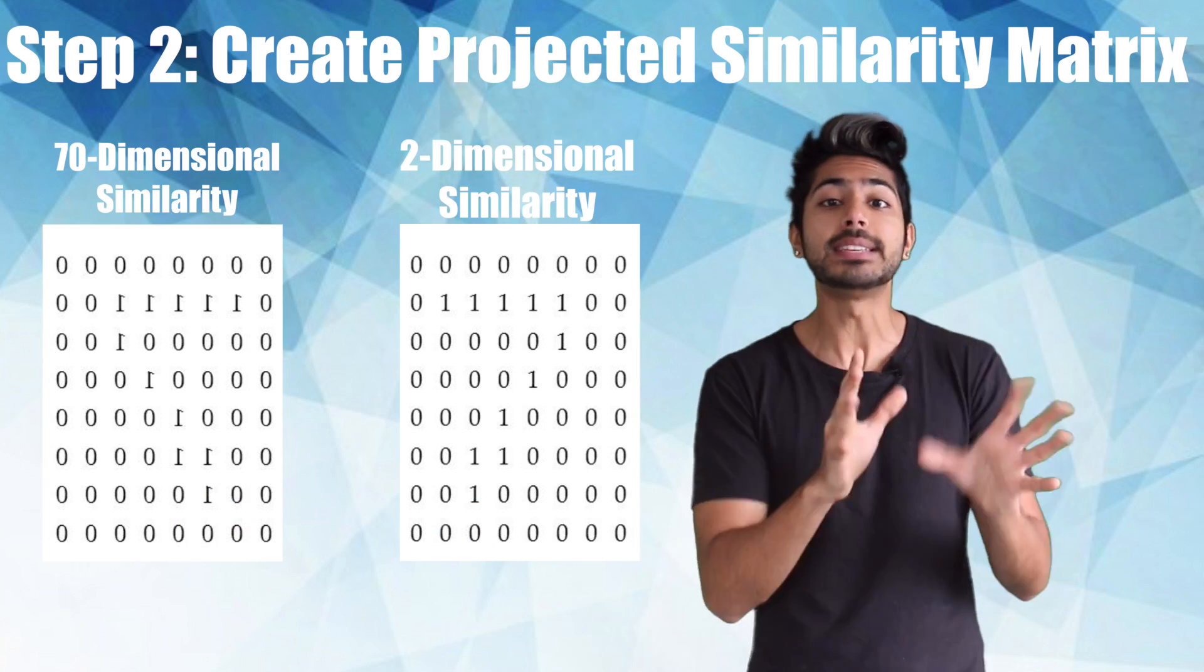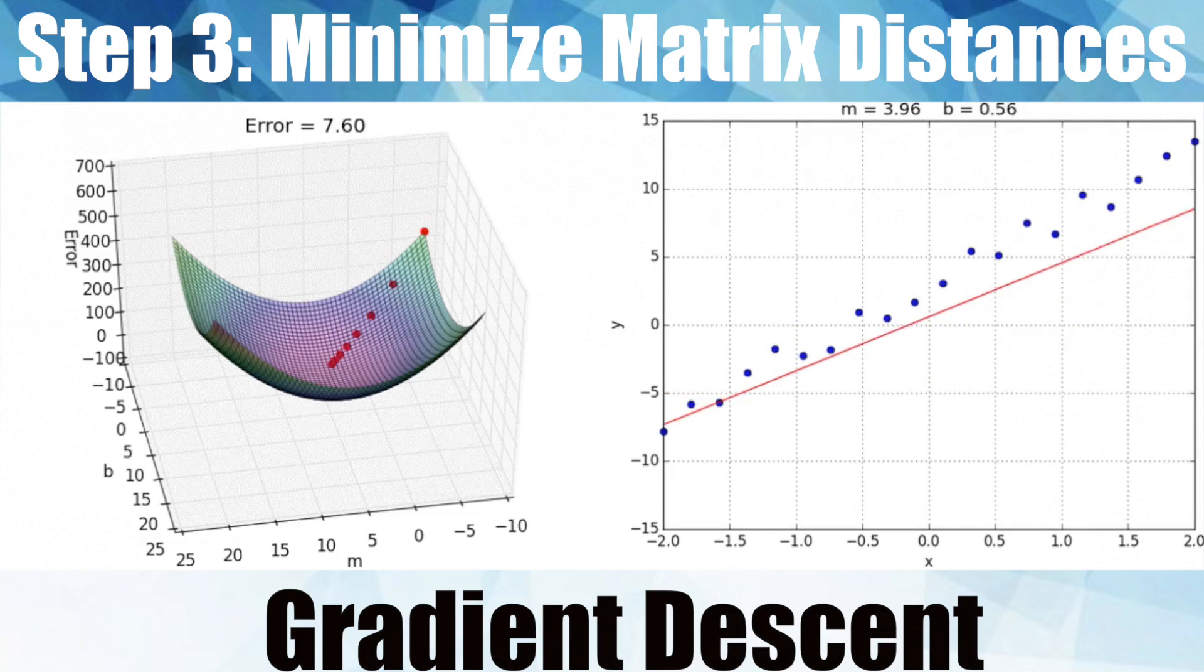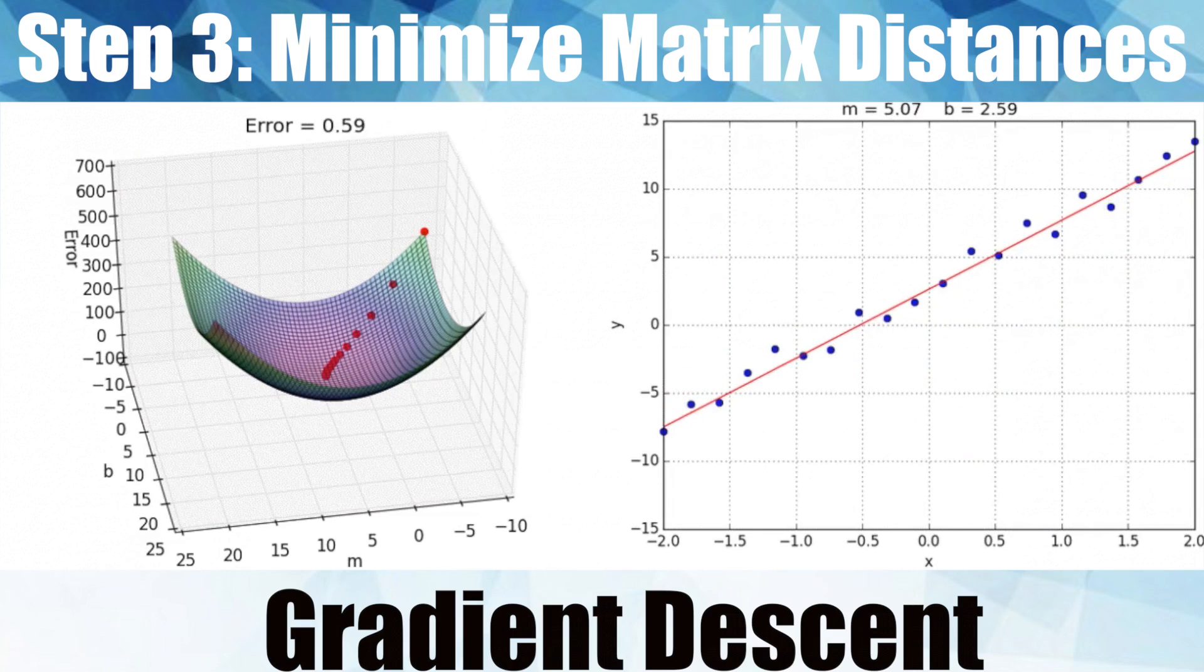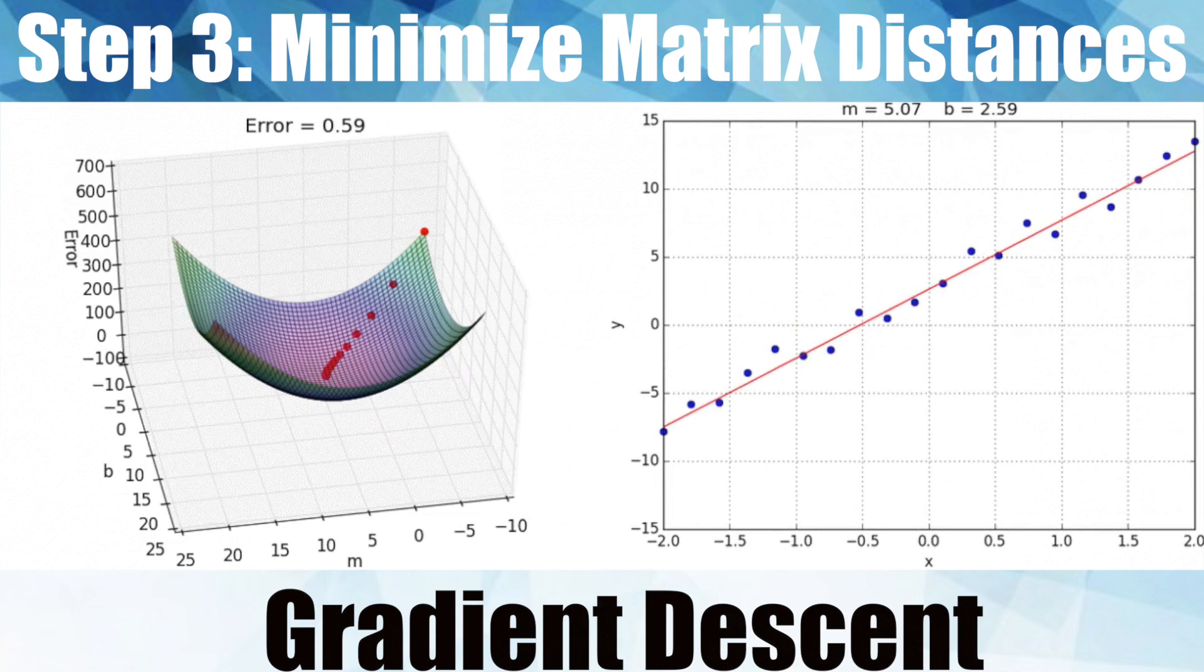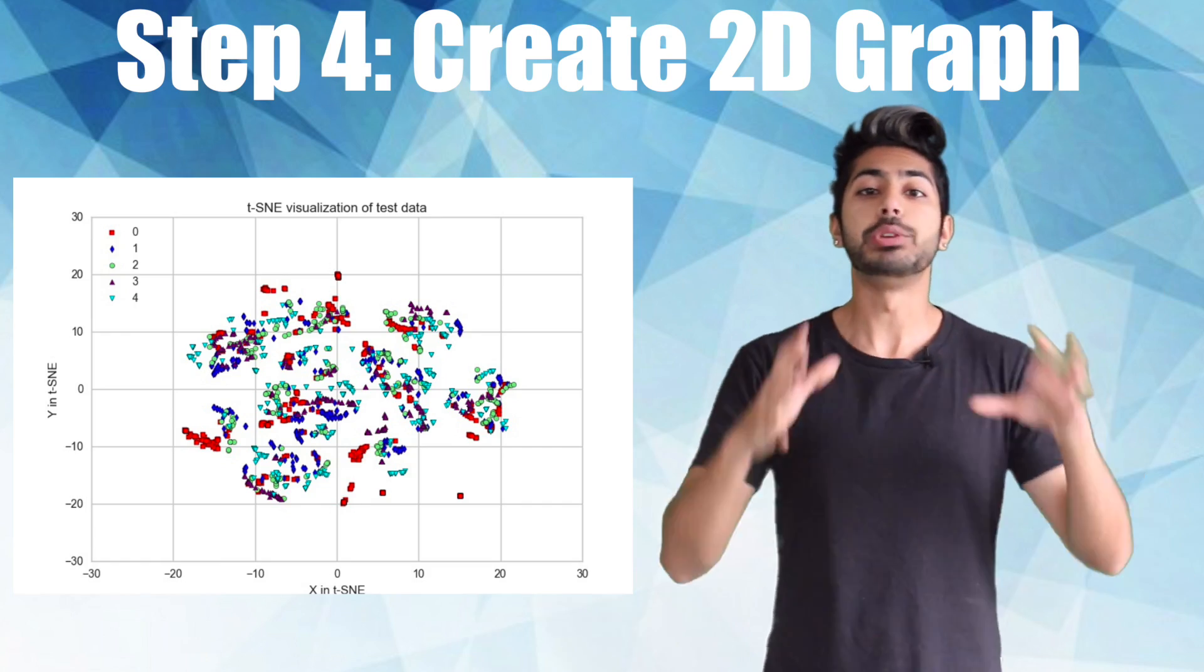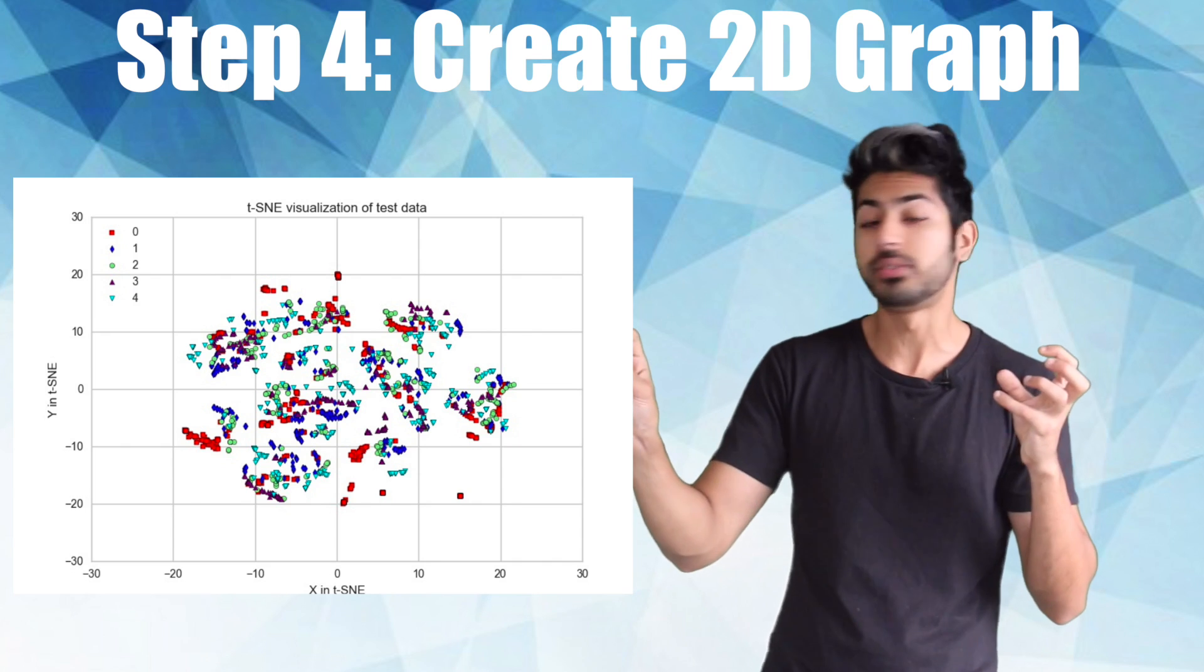We can minimize the distance between these two matrices using a process known as gradient descent. This will slowly bring down the dimensionality of our first similarity matrix by updating its values over time. When it's over, we can use the trained matrix to map the points in 2D space.